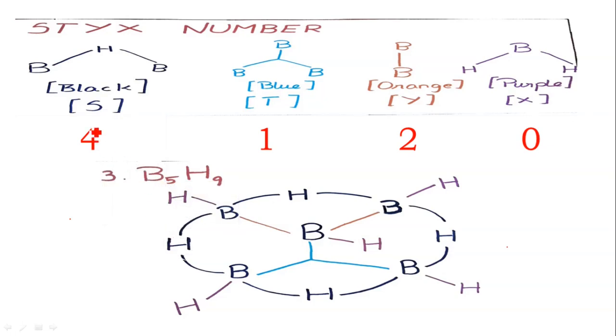In this structure, there are four B-H terminal bonds, one B-B-B (triple bond), two B-B bonds, and zero BH2 bonds. There is no BH2 bond. Hence the Stox number of B5H9 is 4120.